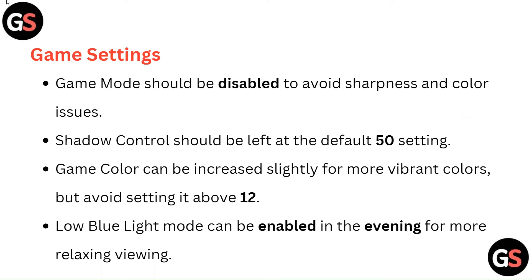Game settings. Game mode should be disabled to avoid sharpness and color issues. Shadow control should be left at the default 50 setting. Game color can be increased slightly for more vibrant colors, but avoid setting it above 12.